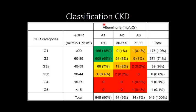Classification of CKD includes two parts: according to the level of albuminuria, and according to the estimated level of glomerular filtration rate. Here you can find the slightly unusual value of 1.73 square meters — it is the patient's body surface area, used relatively and approximately. As you can see, the categories are G1, G2, G3A, G3B, G4, G5, and A1, A2, and A3.